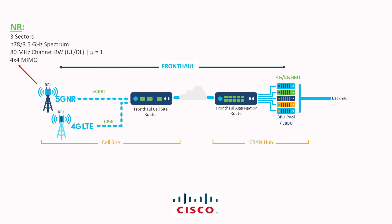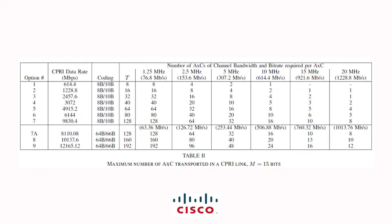The configuration of homogeneous NR radios for the N78 or 3.5 GHz spectrum is 4x4 MIMO using 80 MHz of channel bandwidth for both uplink and downlink. Our first step, as I had explained in my deploying the fronthaul series, is to calculate the fronthaul bandwidth that we need to provision on our fronthaul router.